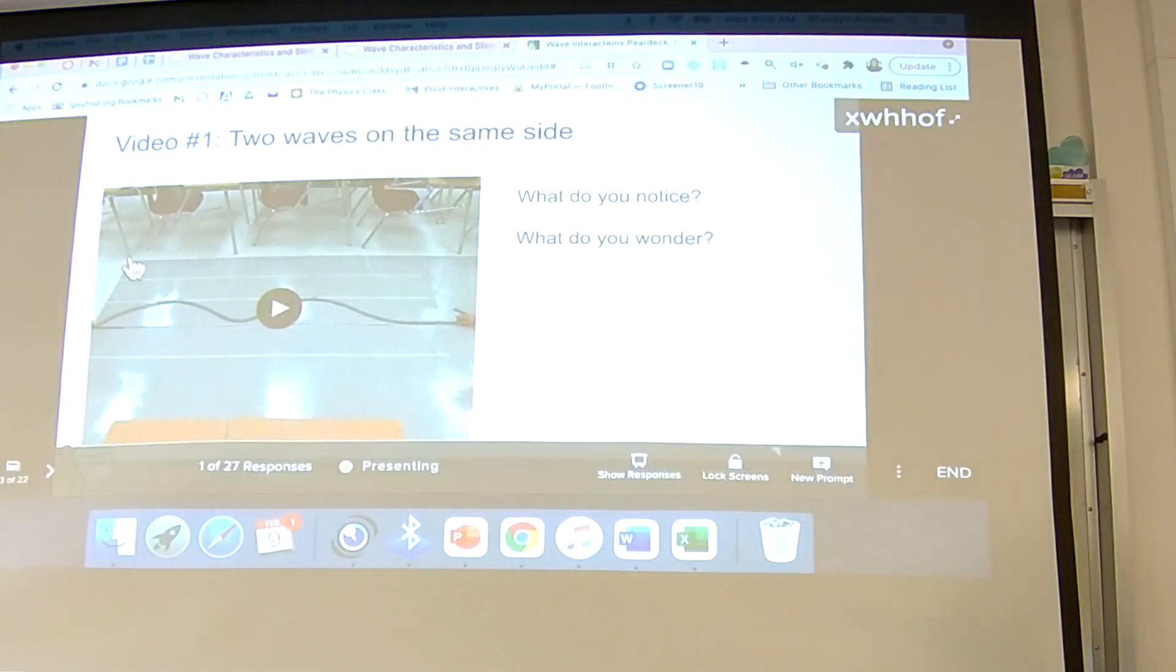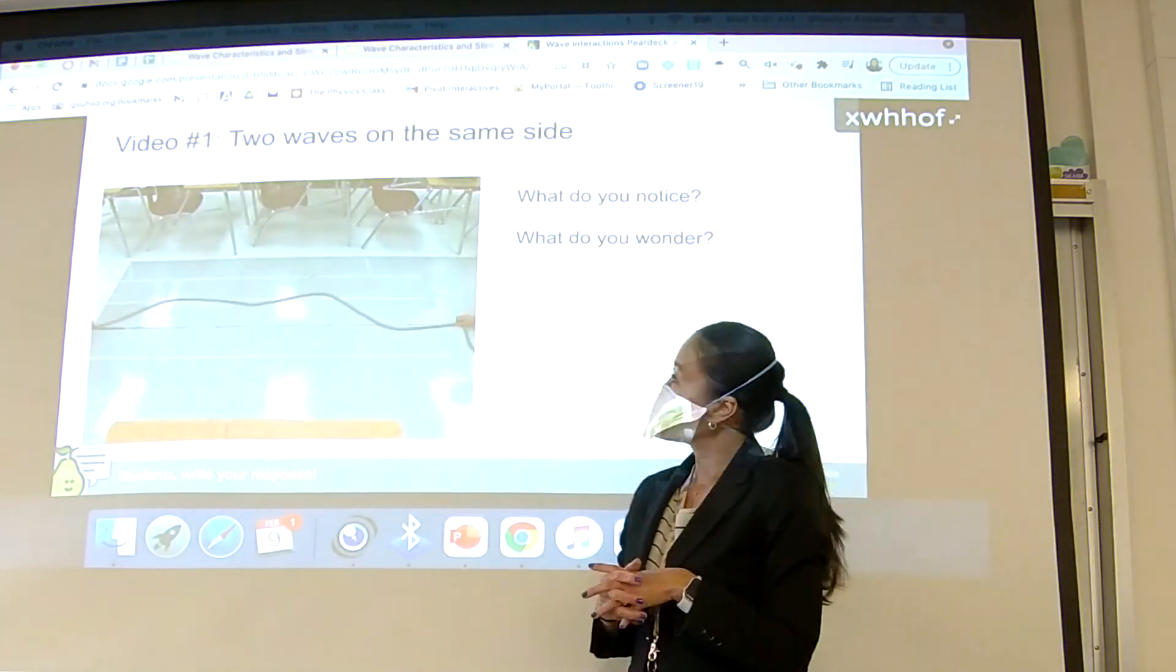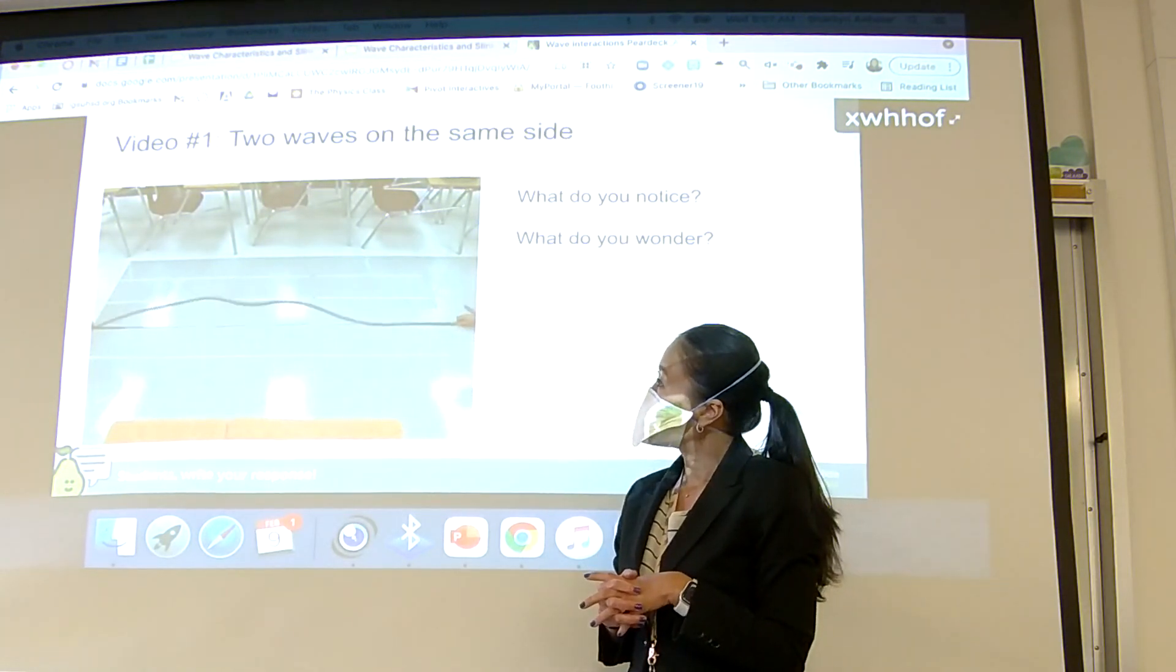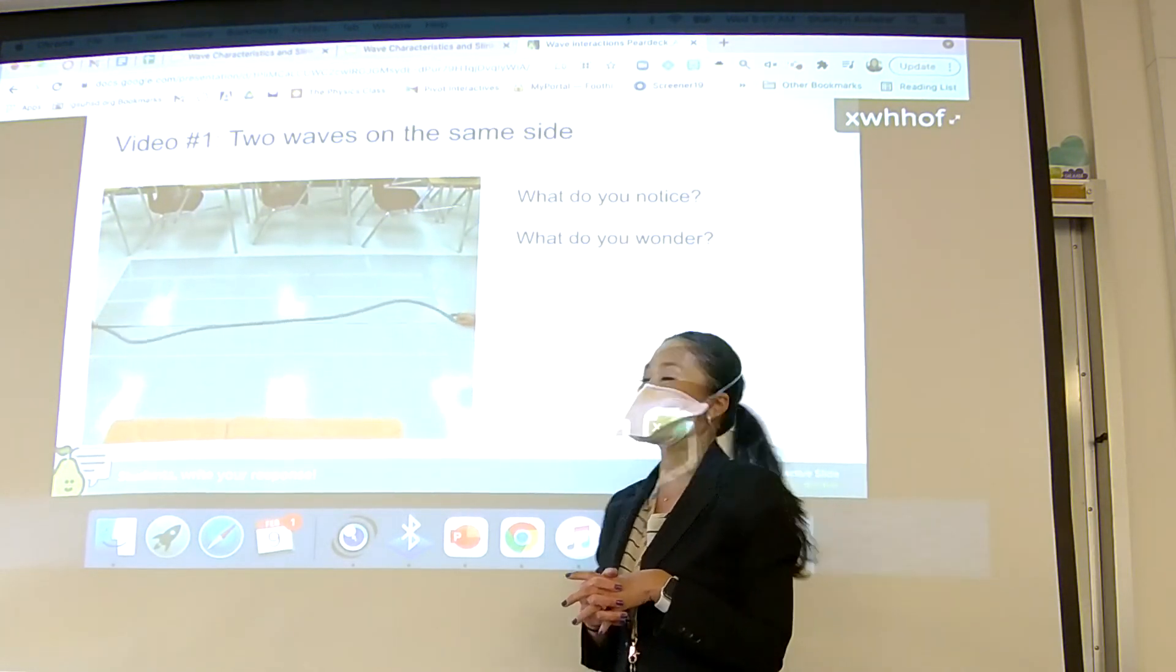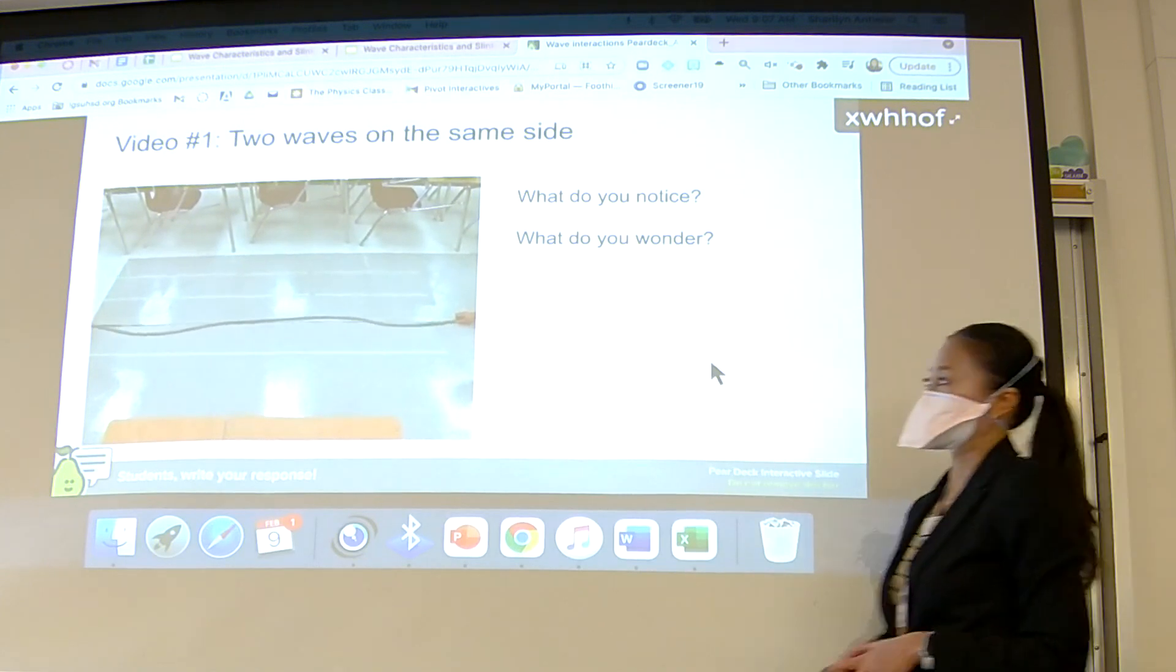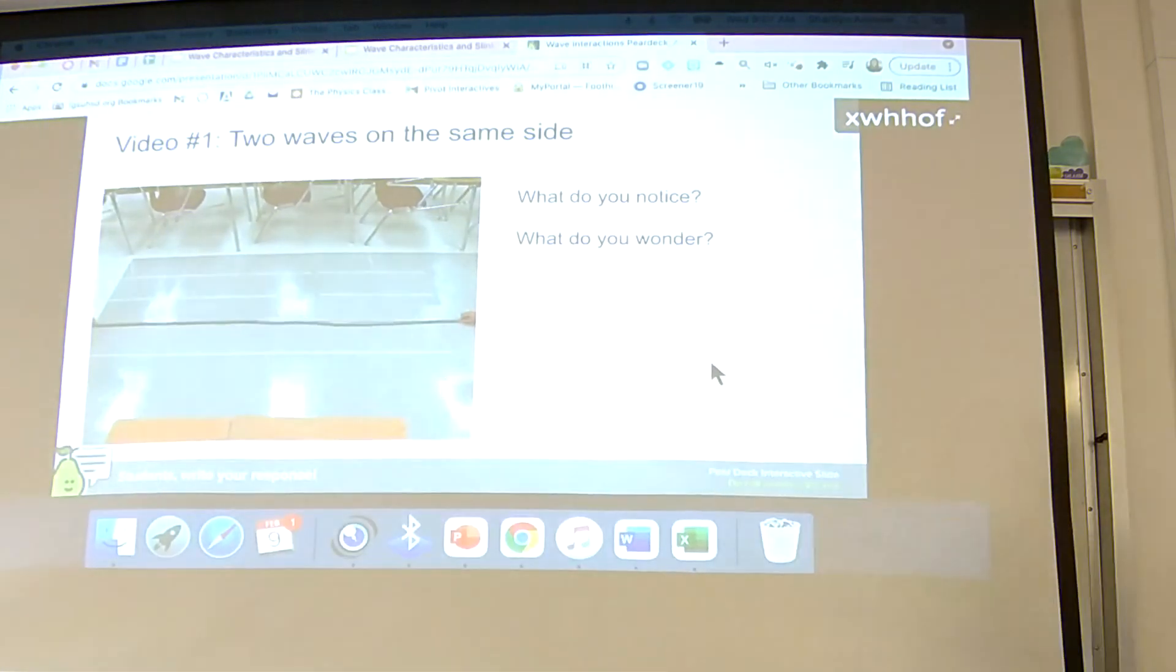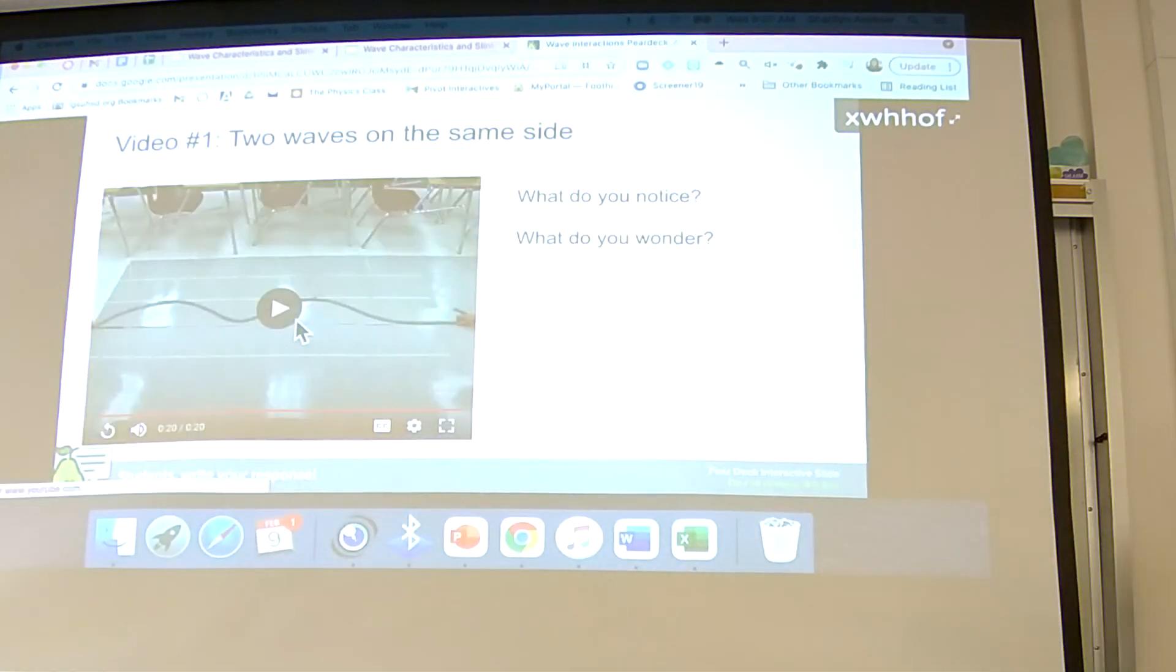I'll go ahead and play it for you, but you can play it over and over again on your own screen. What happens when they come together? And then what questions do you have about this situation? There are lines on the floor to help you analyze this. So I want you to pay attention to these lines on the floor as well. They give you some good methods of analyzing what's happening.